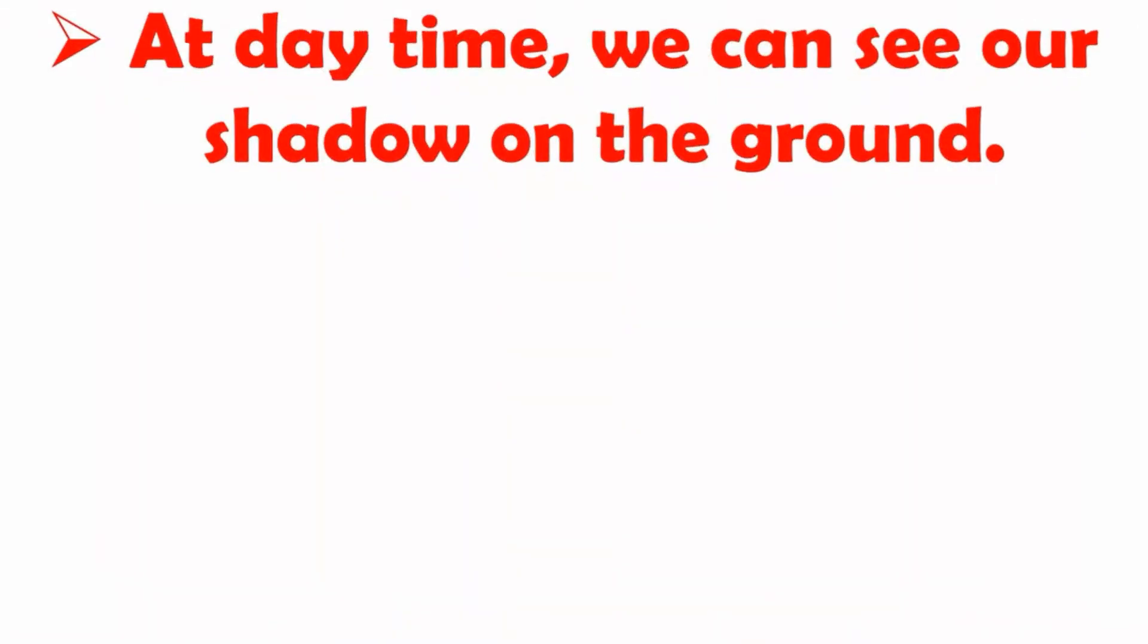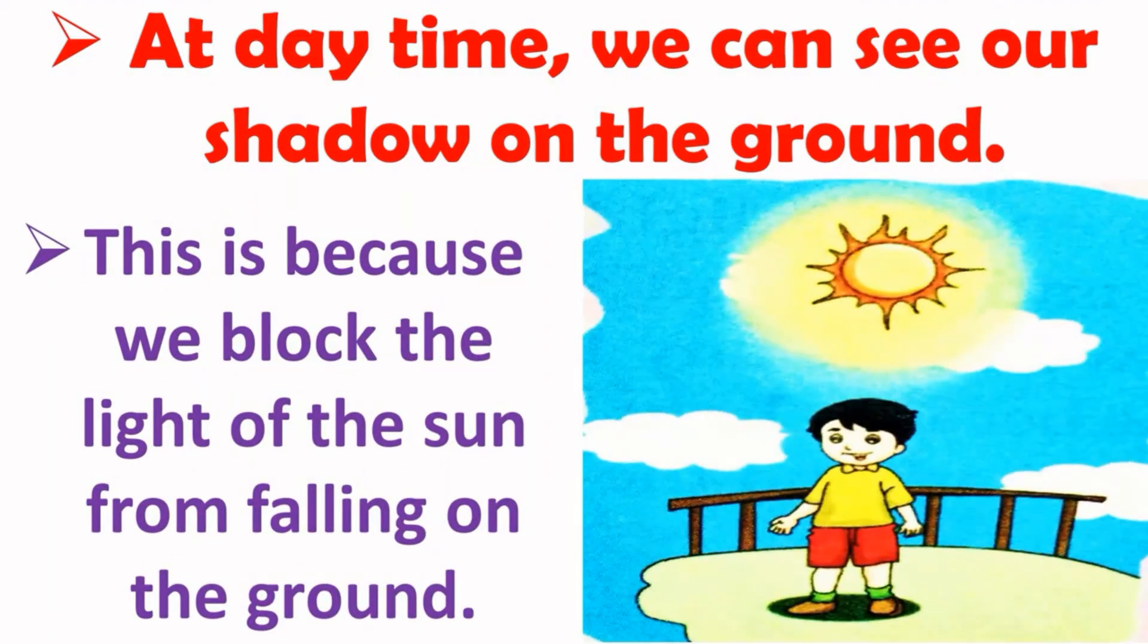Now, at any time when we go out in the sun, we can see our shadow on the ground. Can you tell me why? Yes. This is because we block the light of the sun from falling on the ground.